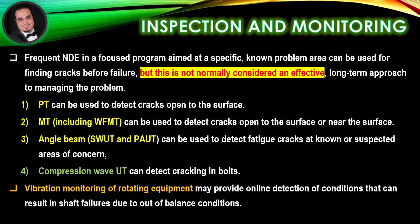Inspection and monitoring: Frequent NDE in a focused program aimed at a specific known problem area can be used for finding cracks before failure, but this is not normally considered an effective long-term approach to managing the problem. PT can be used to detect cracks open to the surface. MT including WFMT can be used to detect cracks open to or near the surface. Angle beam SWUT and PAUT can be used to detect fatigue cracks at known or suspected areas of concern. Compression wave UT can detect cracking in bolts.